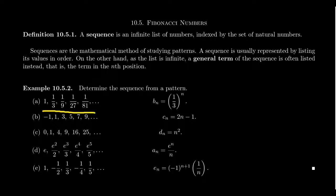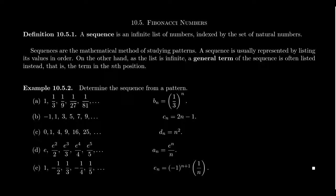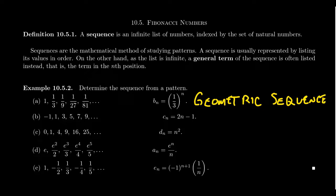Suppose we have the sequence 1, 1/3, 1/9, 1/27, 1/81. Each term looks like 1 over a power of 3: 1 is 3 to the 0th power, 3 is the 1st power, 9 is the 2nd power, 27 is the 3rd power, 81 is the 4th. In general, we can describe the terms as (1/3) to the nth power. This first sequence is an example of a geometric sequence — extremely important. A geometric sequence is like an exponential function; its general term looks exponential. We can also give a recursive definition later on.